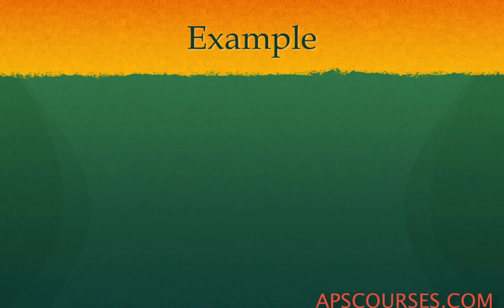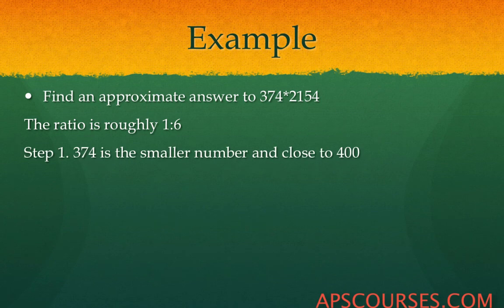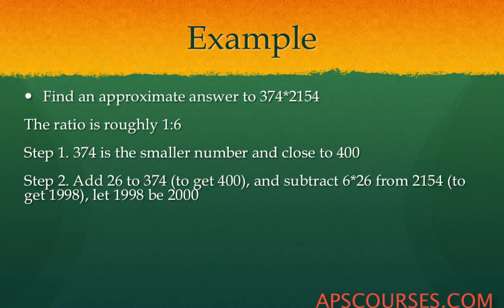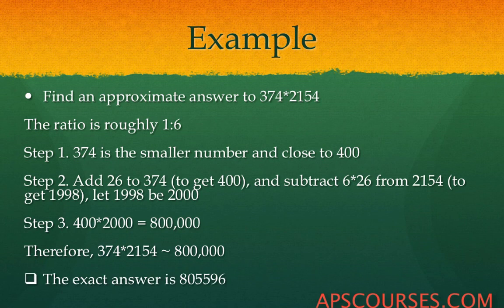Find an approximate answer to 374 multiplied by 2154. The ratio looks roughly 1 is to 6. Step 1: change the smaller number 374 to its nearest multiple of 100, which is 400, by adding 26. Step 2: perform the reverse operation on the larger number — since you added 26 to 374, subtract 6 times 26 from 2154 to get 1998, approximated as 2000. Multiply 400 by 2000 to get 800000. The exact answer is also 800000.